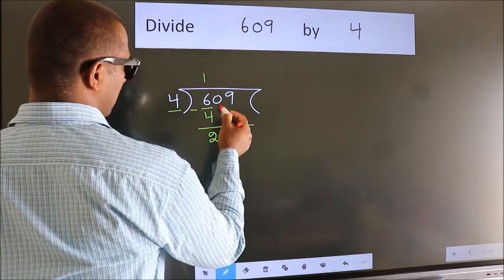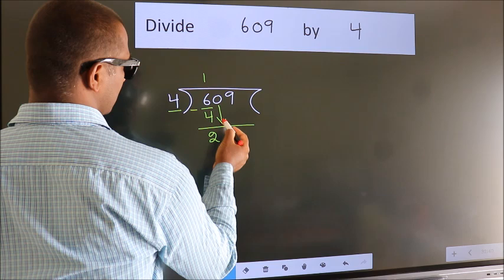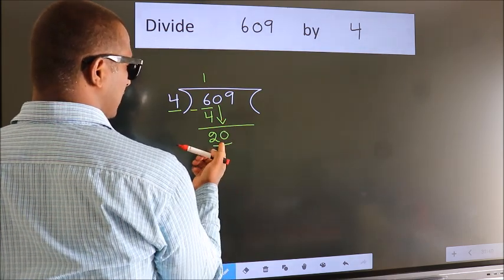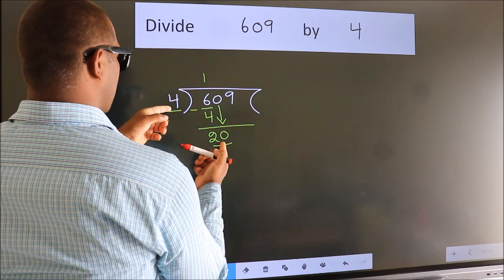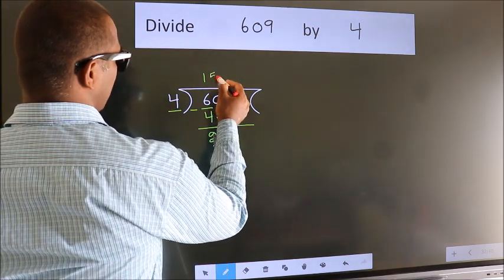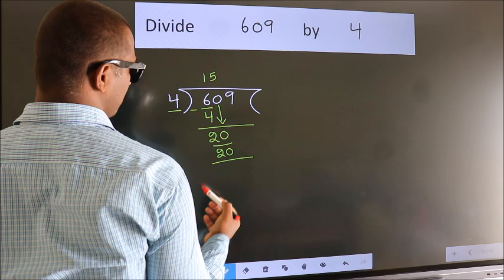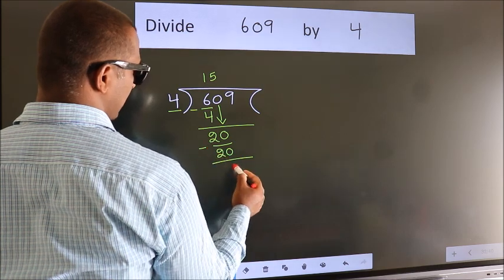After this, bring down the beside number. So, 0 down, giving us 20. When do we get 20 in the 4 table? 4 fives equals 20. Now we subtract. We get 0.